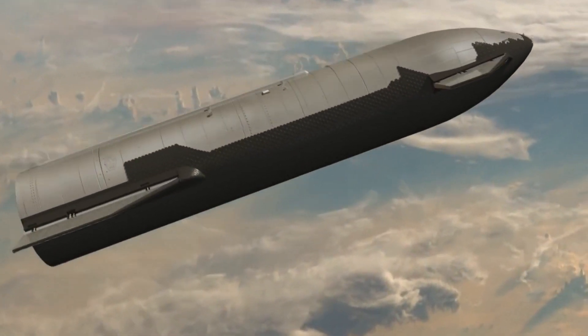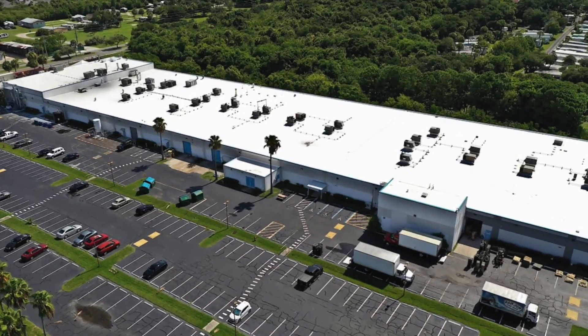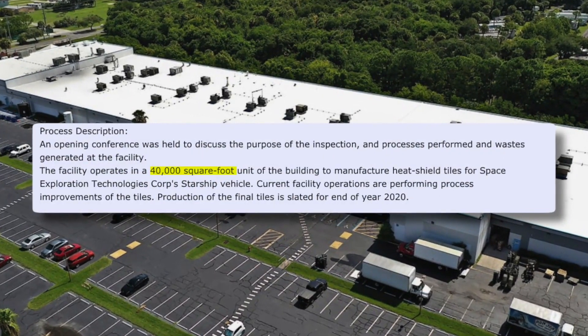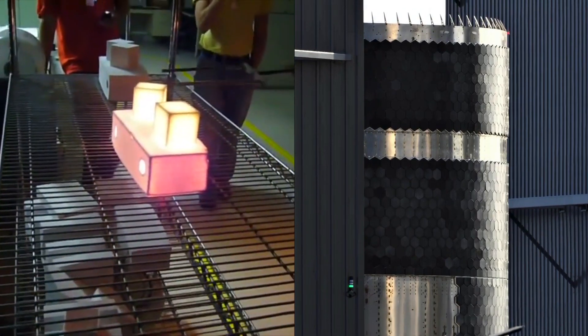The number of employees has almost certainly increased though, because we're approaching Starship rocket's first orbital test flight and the heat shield is a big part of that. The report also states that the facility operates in a 40,000 square foot space, and this is used to manufacture the ceramic heat shield tiles for Starship.